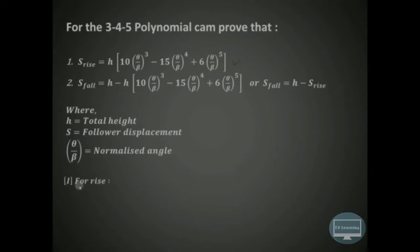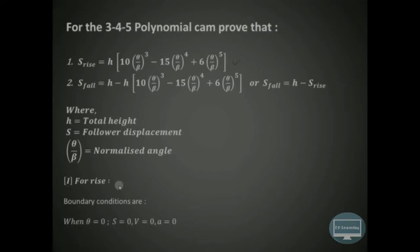Let us understand the first case, that is the rise motion of the follower and cam system. The boundary conditions for rise motion are: when theta is equal to 0, displacement is 0, velocity is 0, and acceleration is also 0. At the end of the rise stroke, theta is equal to beta, and the displacement of the follower is H, which is the total height, so S is equal to H.